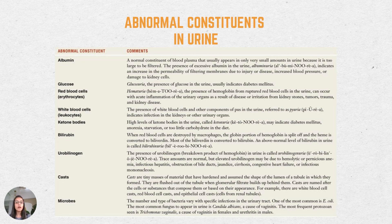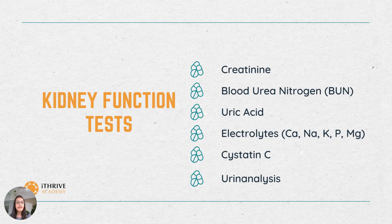Moving on to the abnormal constituents in the urine — albumin, glucose, red blood cells, white blood cells, ketone bodies, bilirubin, urobilinogen, casts, and microbes are not a normal part of urine. The presence of these substances in the urine is a sign that something is wrong in the body.